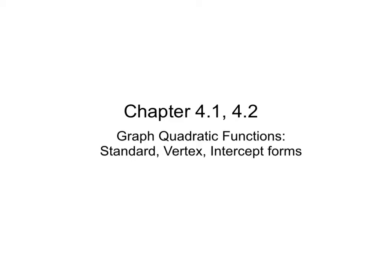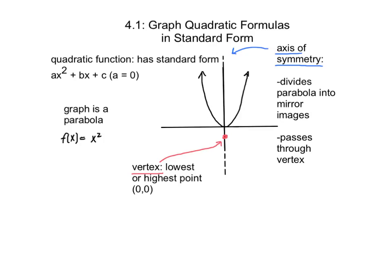We're going to be covering chapter 4, sections 1 and 2. This will cover quadratic functions in their standard, vertex, and intercept forms. Section 4.1 is graphing quadratic functions in standard form. Standard form is ax squared plus bx plus c, when a is not 0. For example, 2x squared plus 3x plus 4 is a quadratic function in standard form.